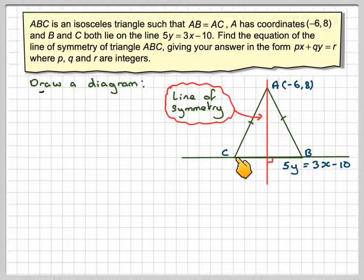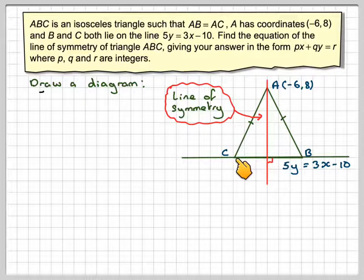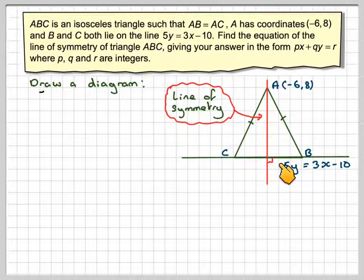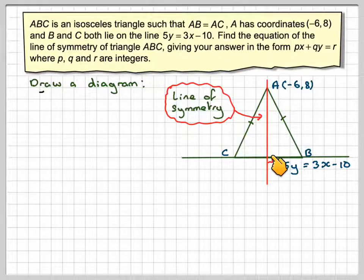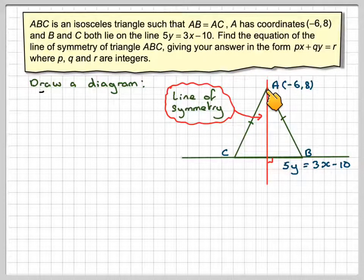It doesn't actually matter what the coordinates of B and C are. We don't really need to know them to answer the question, because the method is to find the gradient of this line, use the fact that these two lines are perpendicular to find the gradient of this line. And because we know one point on the line, (-6, 8), we can find its equation.